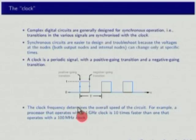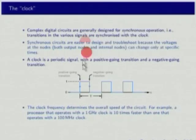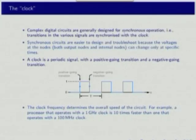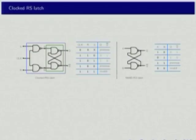The clock does not have to have a 50% duty cycle; it can have different duty cycles. The important thing is that each clock cycle has a positive-going edge and a negative-going edge. The clock frequency is extremely important because it determines the overall speed of the circuit. For example, a processor at 1 GHz is 10 times faster than one at 100 MHz.